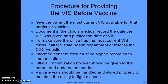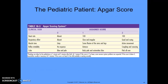Procedure 18.1 outlines the procedures for documenting immunizations, and we will be doing this in class. The APGAR score, found in Table 18.3, is a system for evaluating the infant's physical condition at one and five minute intervals after birth. This scoring system evaluates appearance, pulse, grimace, activity, and respiration.